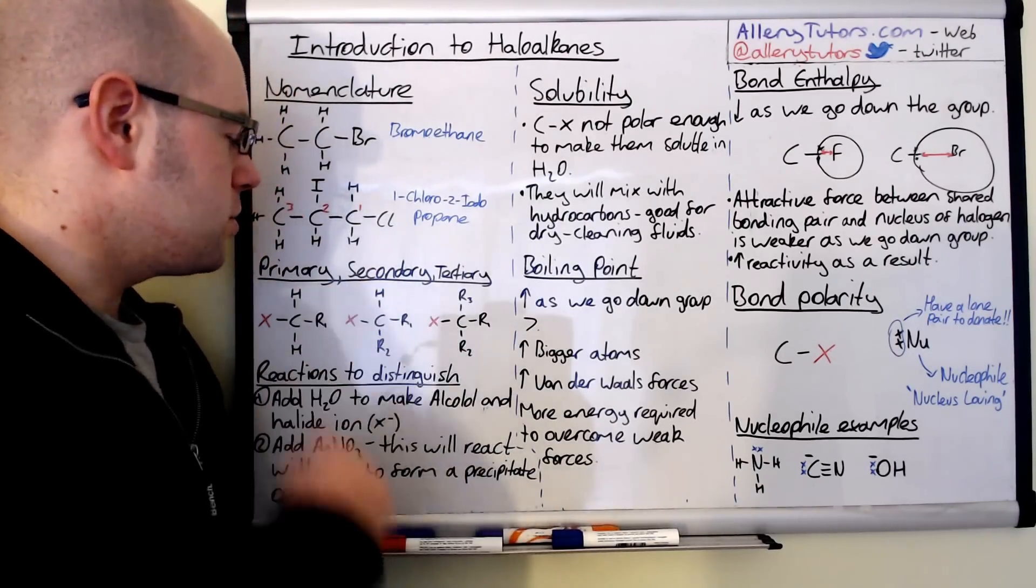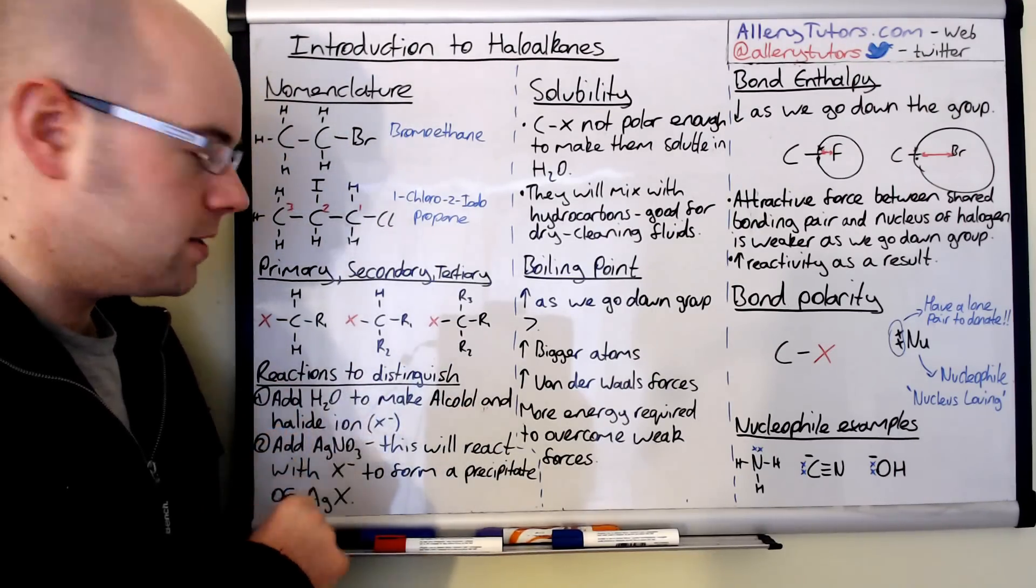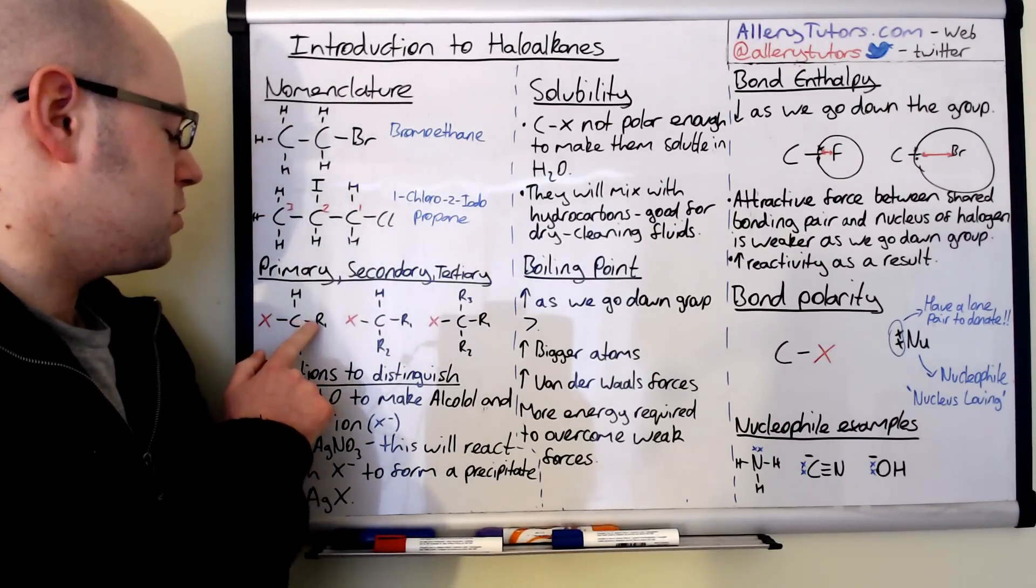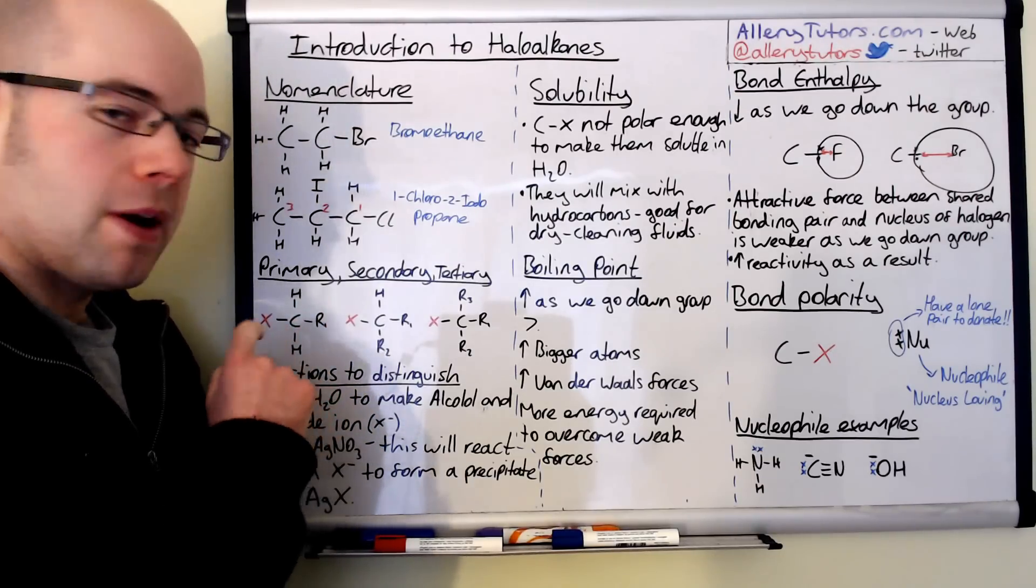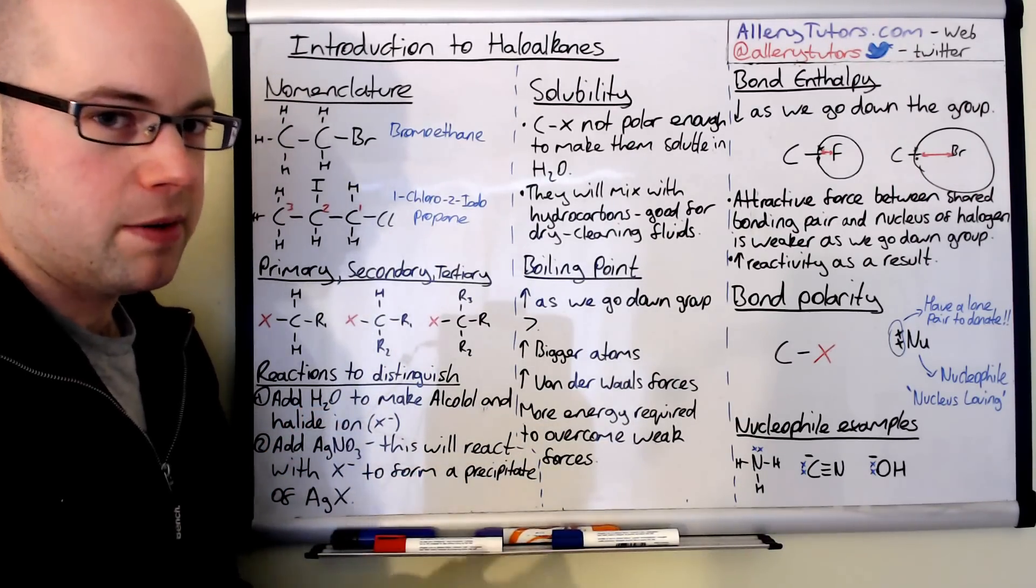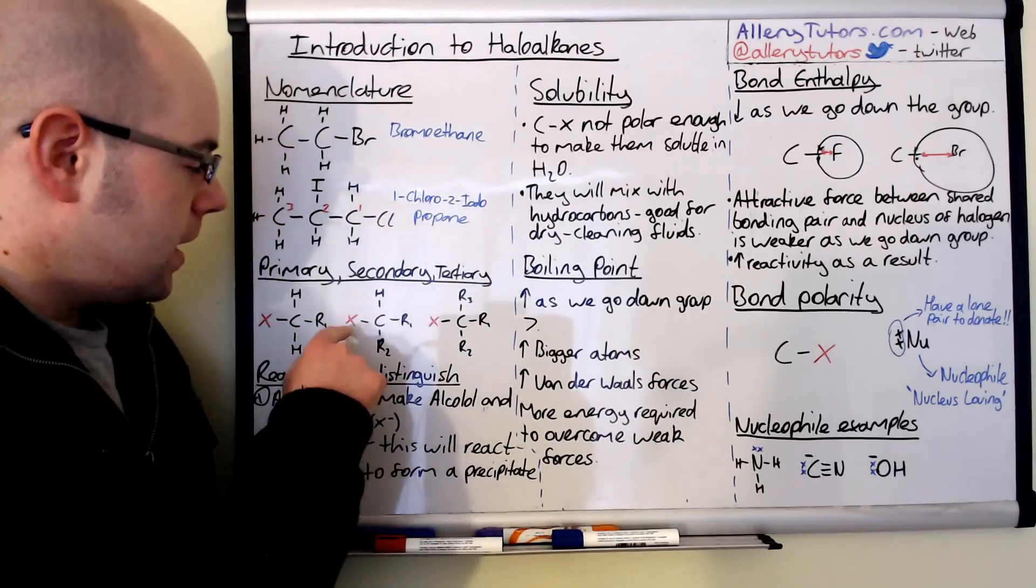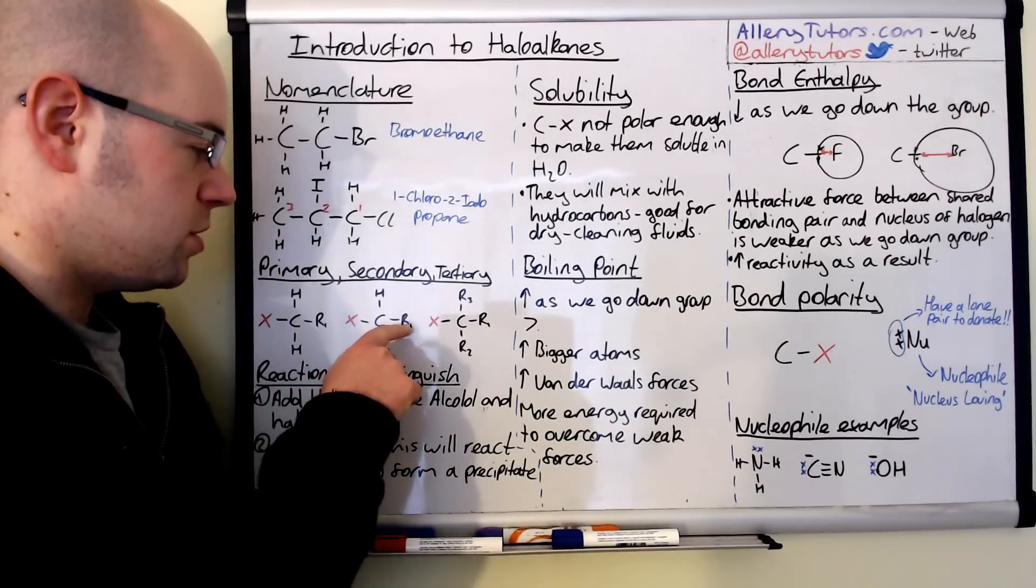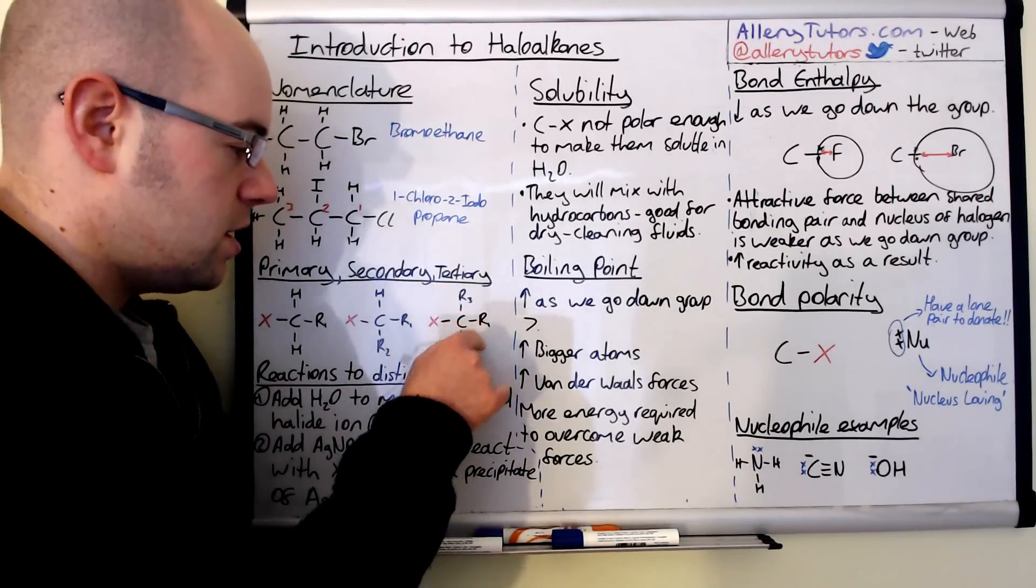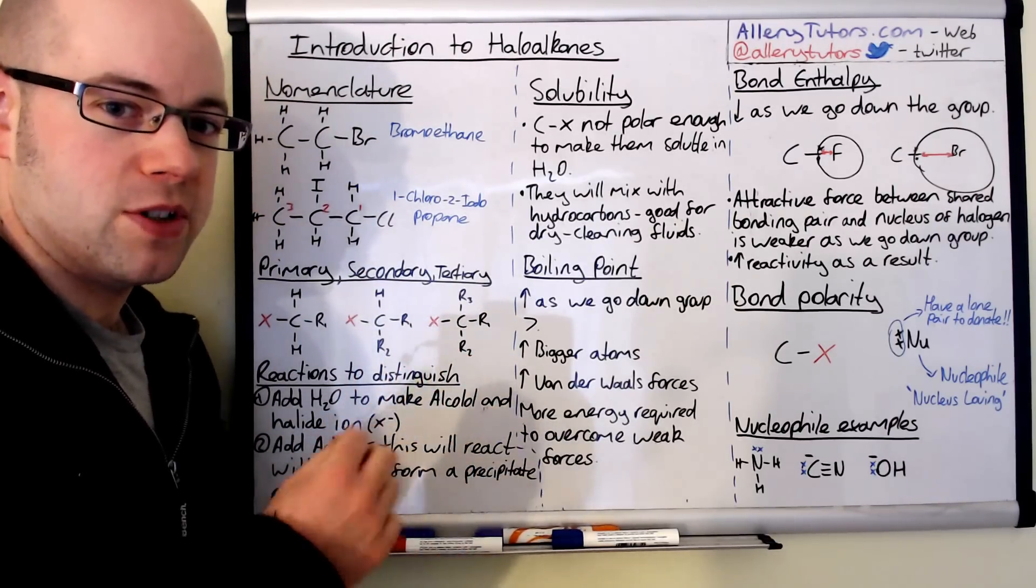We're just going to have a look at what we mean by primary, secondary and tertiary. We can see here we've got three different haloalkanes. The first one is primary because we've got a halogen bonded to a carbon which is only bonded to one other carbon. Secondary: halogen is bonded to a carbon which is bonded to two other carbons. And tertiary is the halogen bonded to a carbon which is bonded to three other carbons. That's how you identify as primary, secondary or tertiary.